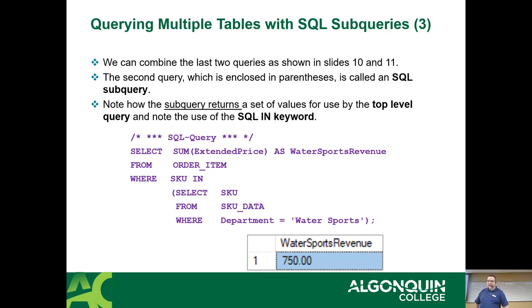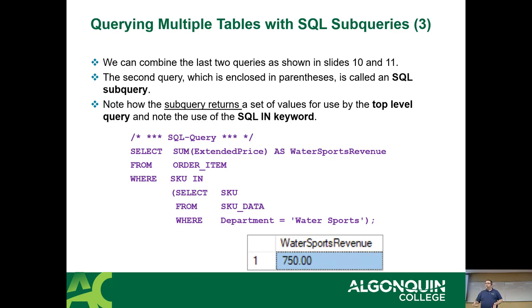What we can do is combine the subquery and the original query as a single item. All it is is the exact same two queries, except instead of having the list of SKUs, we have another query inside brackets. This is known as a subquery. It runs first - just like when you do math and resolve your parentheses, it runs the inner query, grabs all the results, and passes them as a list to the outer query, effectively turning it into a comma-delimited list.